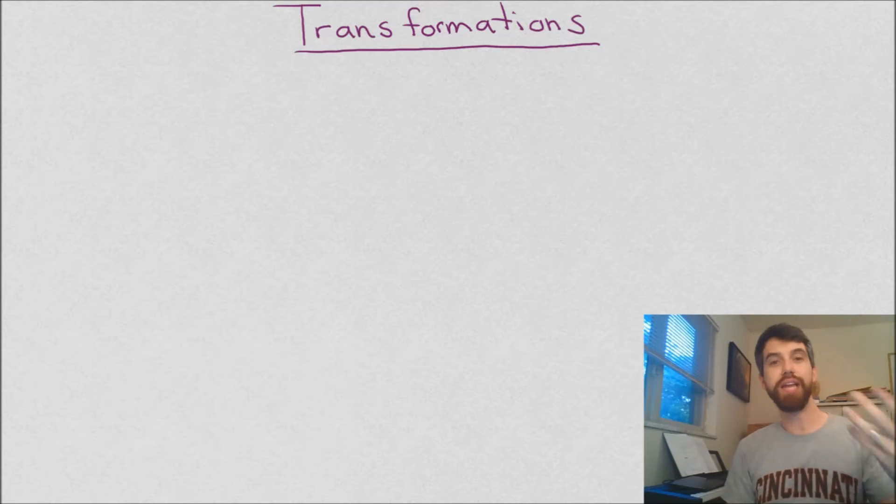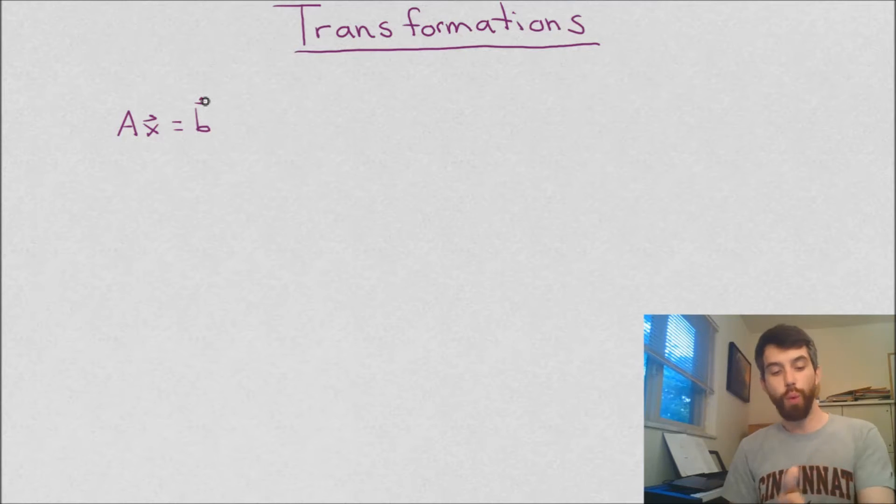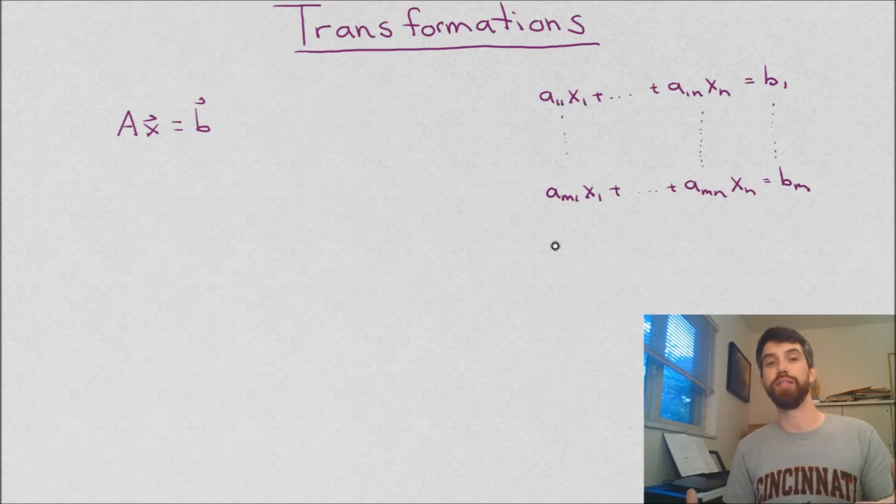Now, contrast that very dynamic sort of transformative picture with something we've seen many times already. This is the linear system Ax equals b. And I would suggest that the way we've been thinking of Ax equals b has been relatively static. Indeed, Ax equals b was just sort of shorthand for this much larger set of notation, which was a linear system.